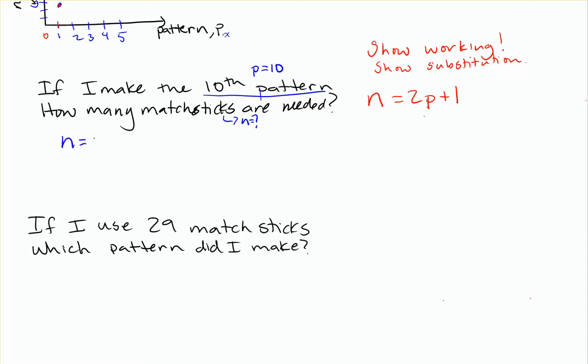So to show my substitution, I'll take my rule, n is equal to 2p plus 1. And I'm going to do my substitution. So instead of writing p, I'm actually going to say 2 times 10, because I want to examine when p is equal to 10 for the tenth pattern. So this is what I mean by showing my substitution. I'm showing that I'm using my rule by going 2 times, replacing the p with a 10, and then plus 1. So 2 times 10 is 20, plus 1 is 21. And don't forget your units, matchsticks. And use units. Important reminders for you here.